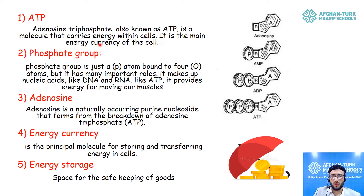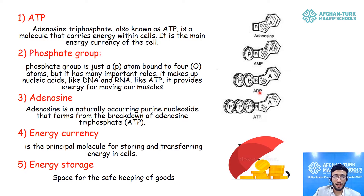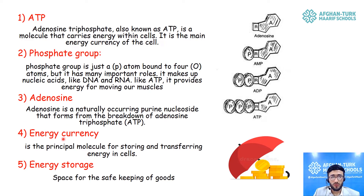How is ATP formed? It is formed when adenosine reacts with phosphate groups. When one phosphate group attaches to adenosine, it forms adenosine monophosphate, meaning it has only one phosphate group. When another phosphate group is added, it produces ADP, adenosine diphosphate. At the final stage it produces ATP, the energy currency used by cells to function.